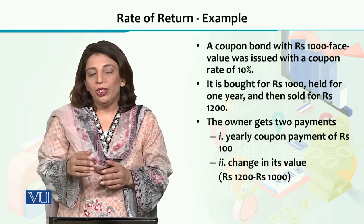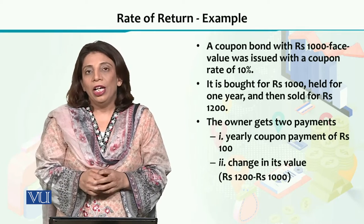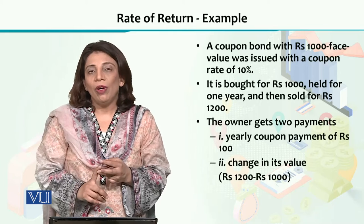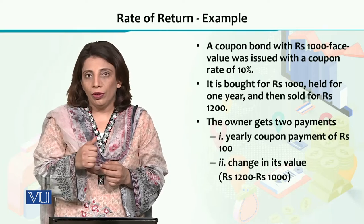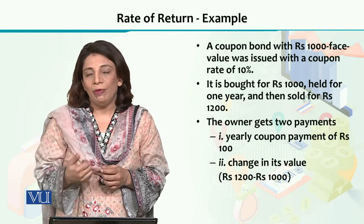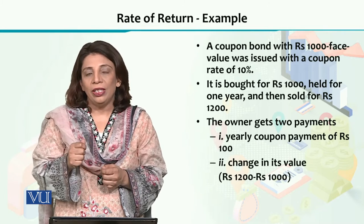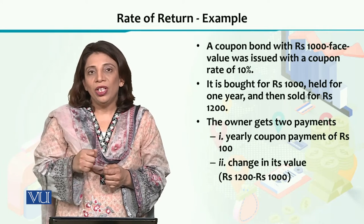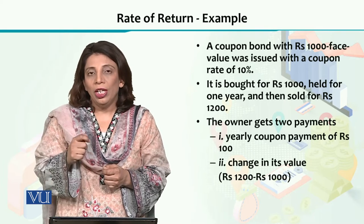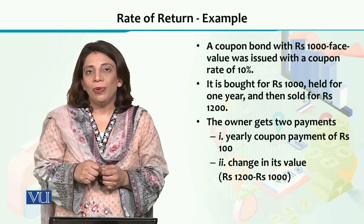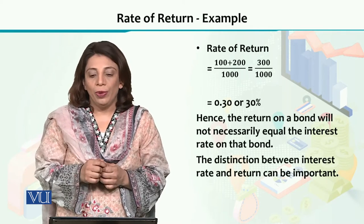If the person who owns that coupon bond sells it in the market, he will get two types of payments. One will be the coupon payment, which is 10% of the money he invested. On top of that, he will also get the difference between the price at which he purchased the bond and the price at which he sells it. In our example, the purchase price was 1000 and the sale price is 1200, so there is a difference of rupees 200.